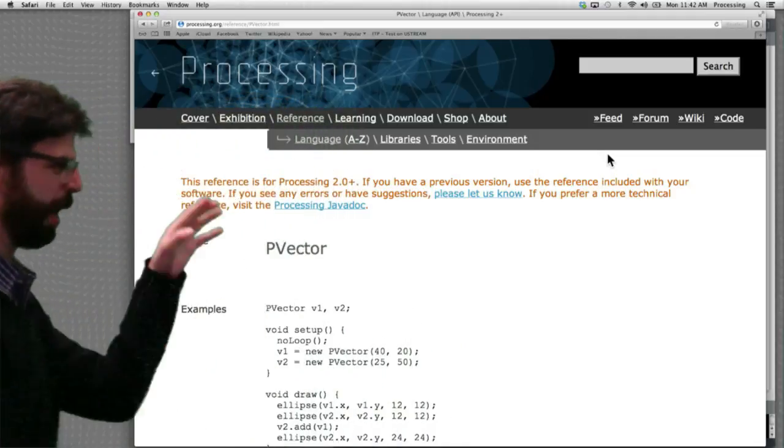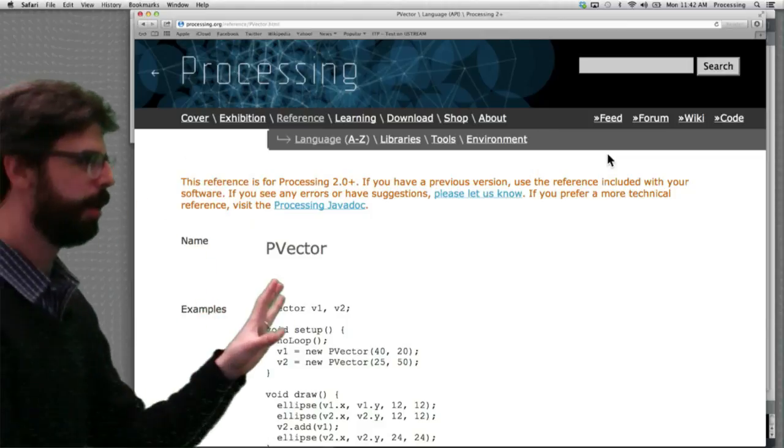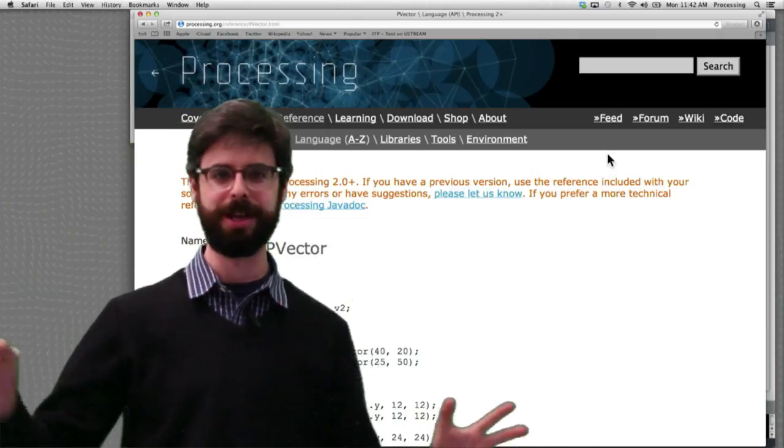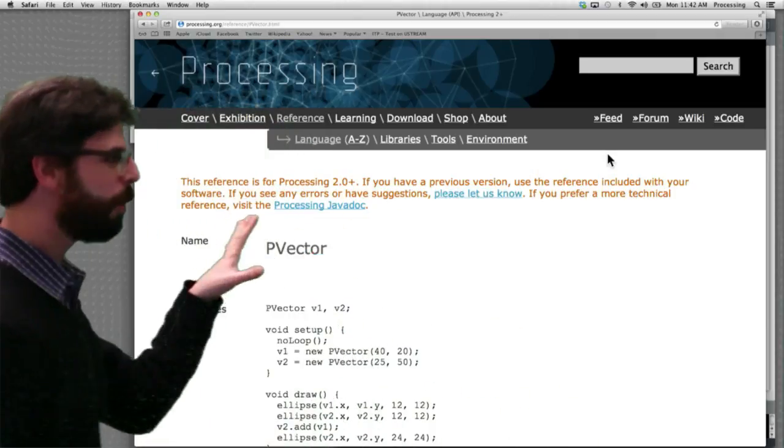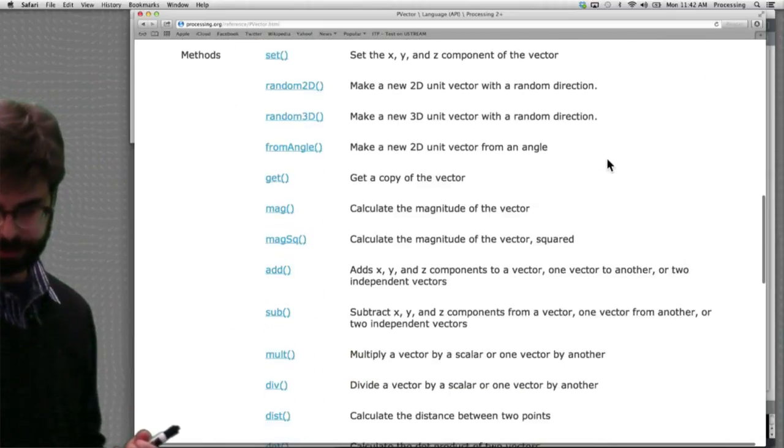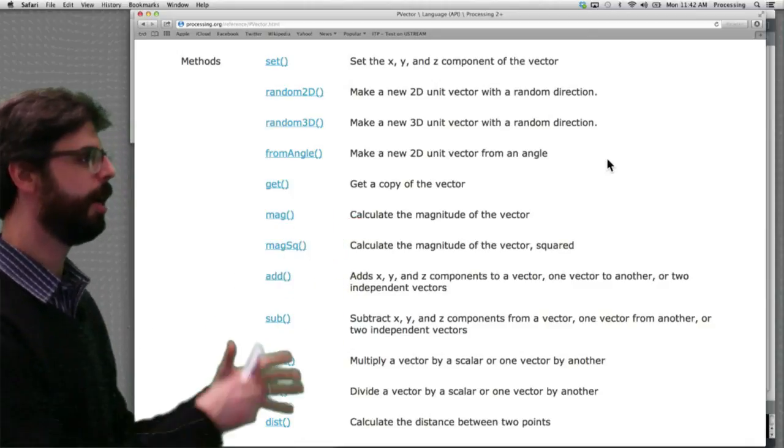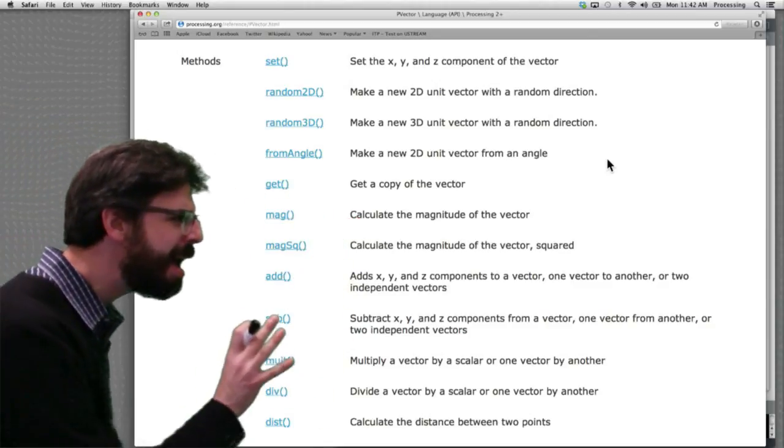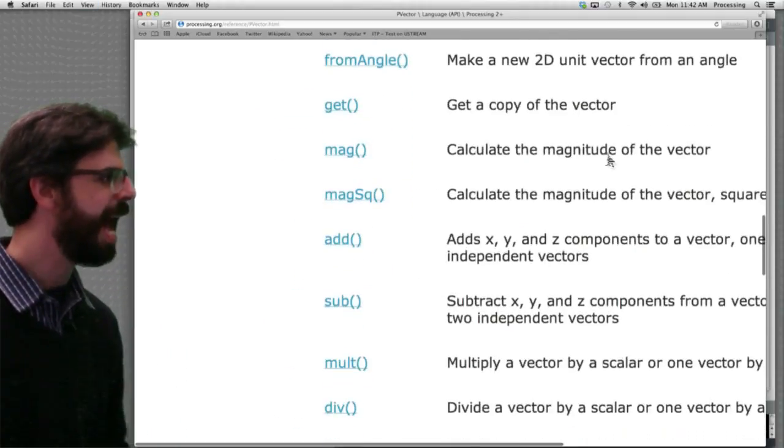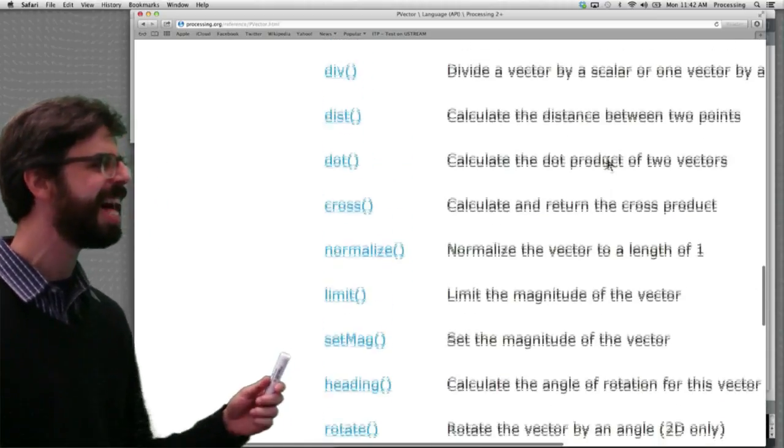Look over here, this is the Processing PVector documentation page. This isn't a comprehensive lesson on everything you could possibly ever do with vectors. But if we scroll down a little bit, we can see here are a list of functions available in the PVector class. Random, set, mag, mag squared. Add, subtract, multiply, divide, distance, dot, cross, normalize, limit, set mag, heading, rotate, lerp. There's lots of functions.